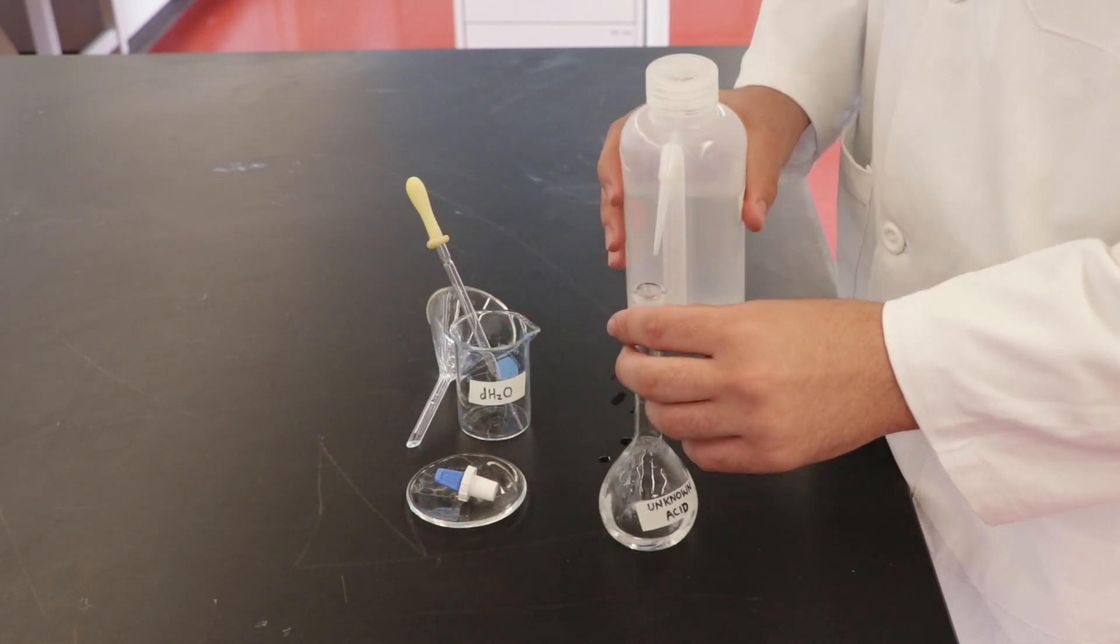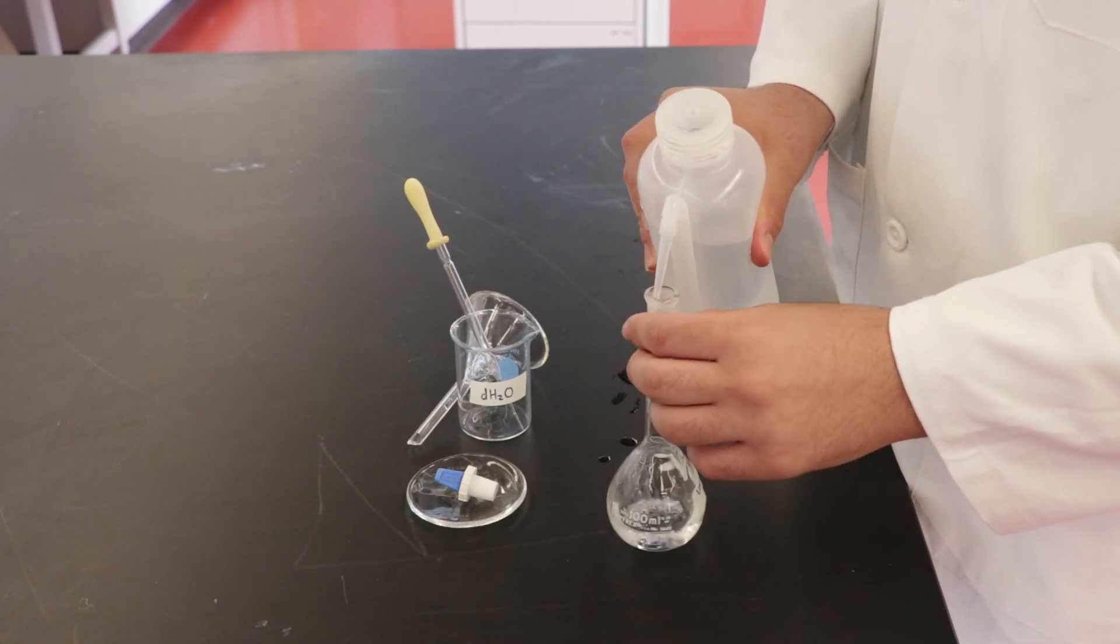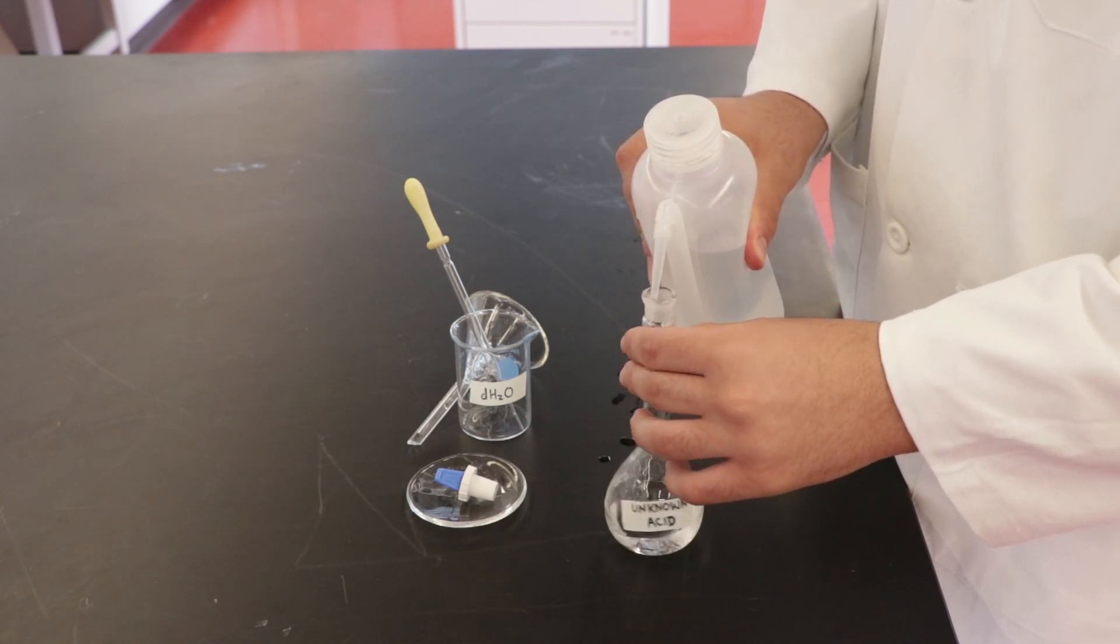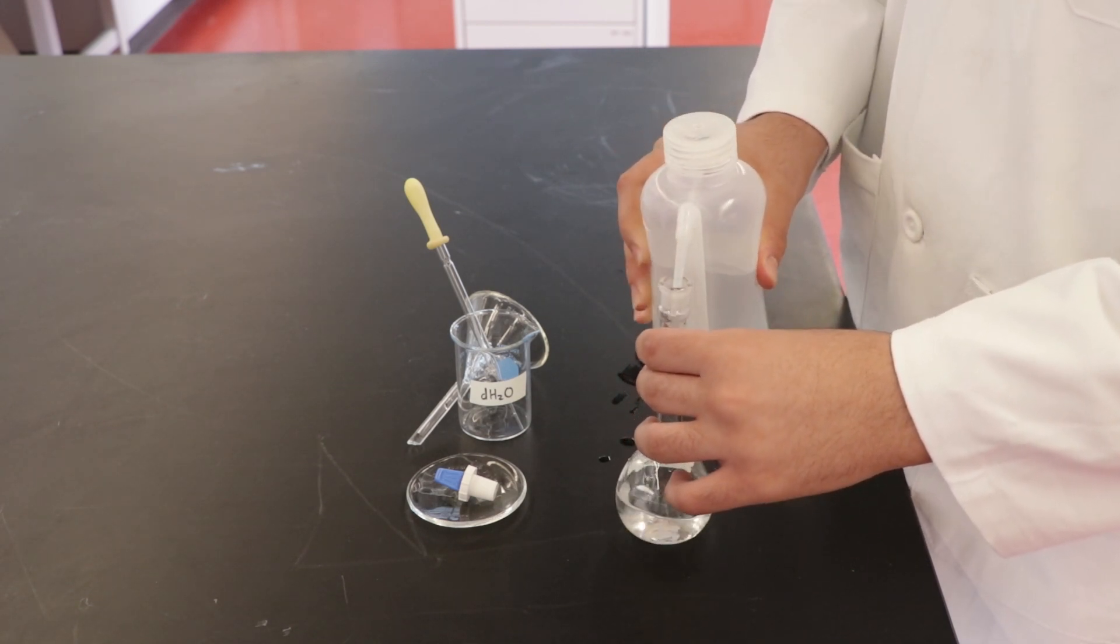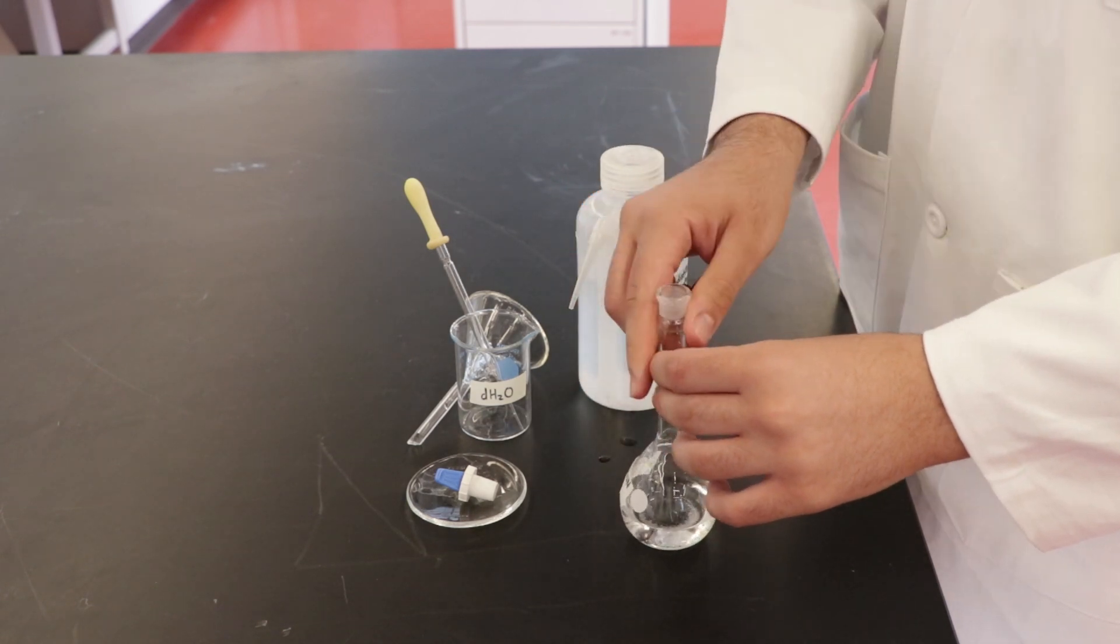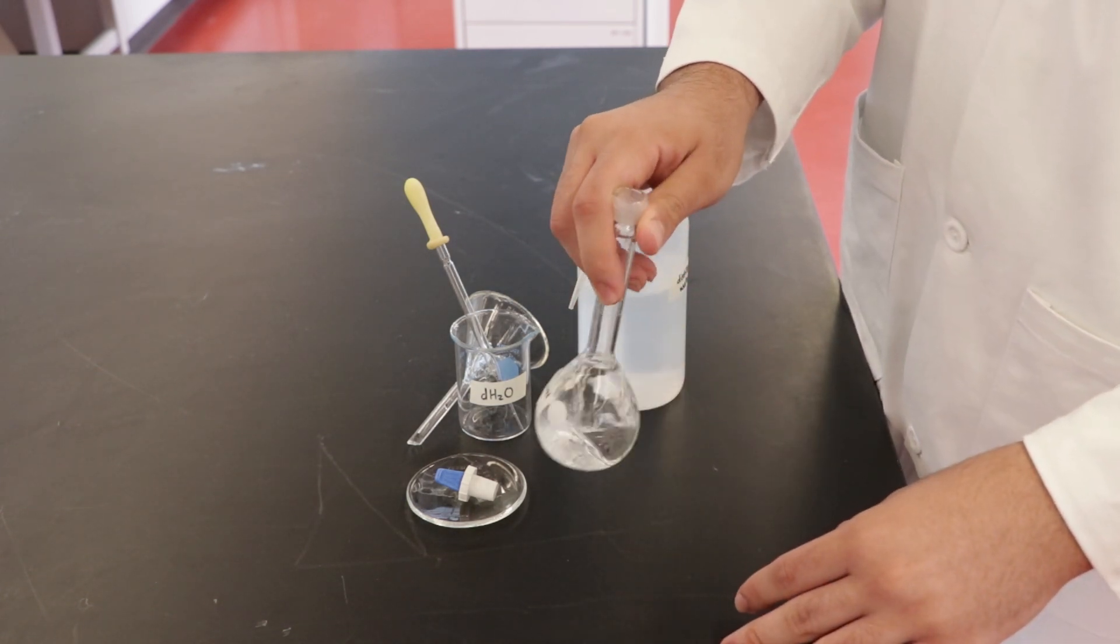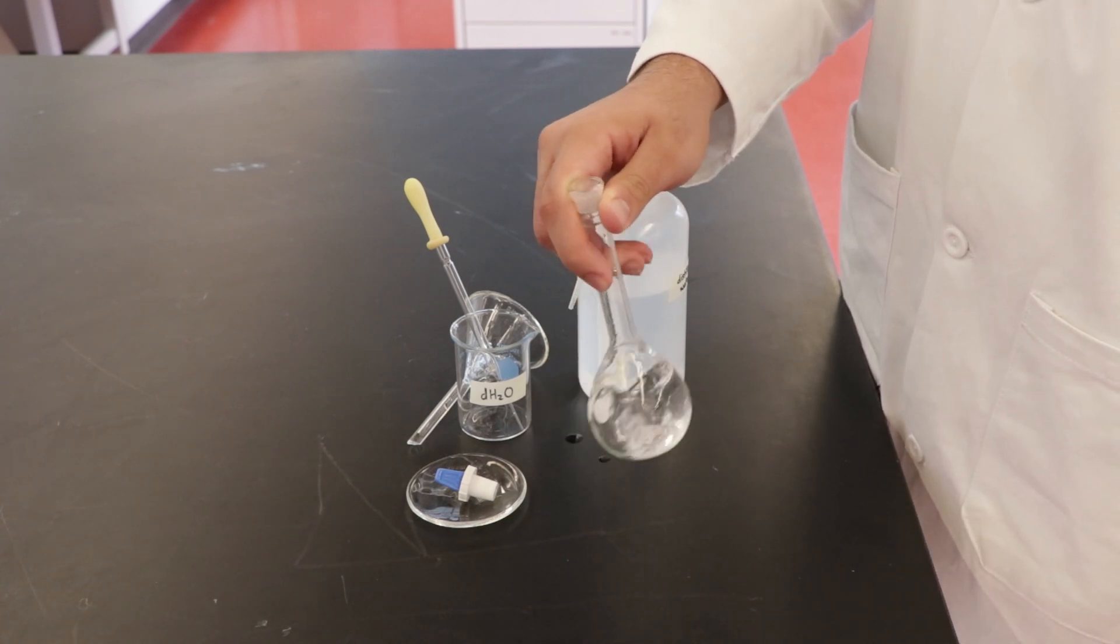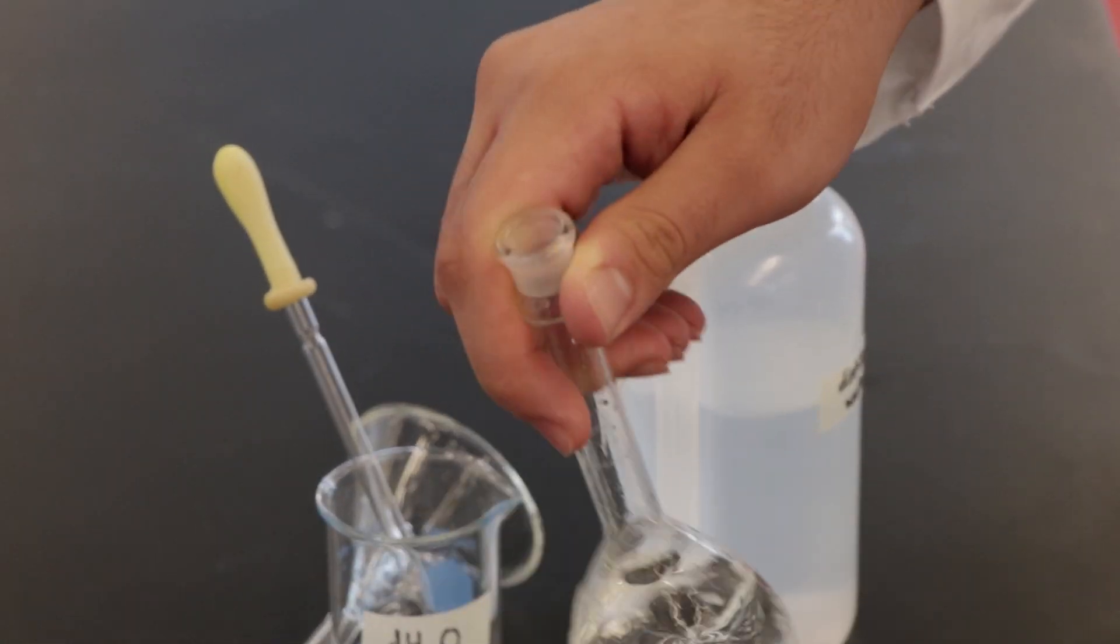To finish preparing the standard solution, add about a third of the flask volume using the wash bottle and rinse the neck of the flask while doing so. Swirl the flask to allow the acid to dissolve. It is important to dissolve all the solid before filling to the mark. Do not invert the flask at this step.